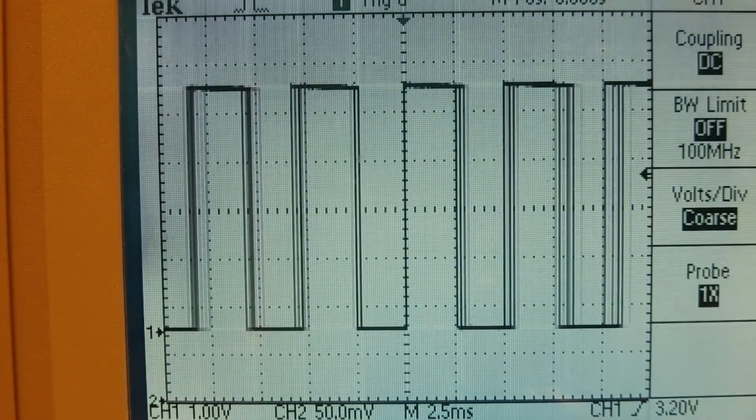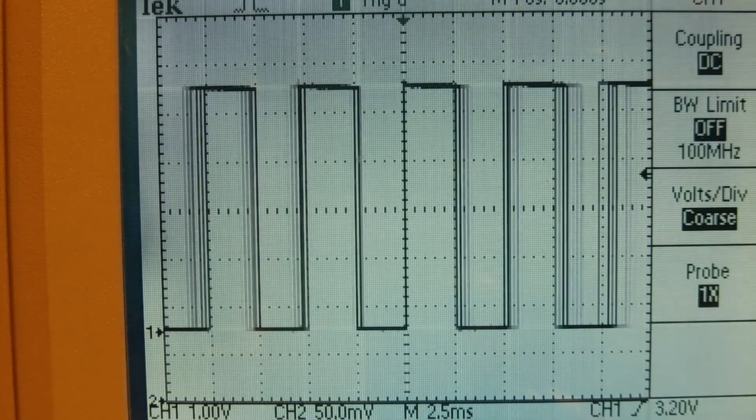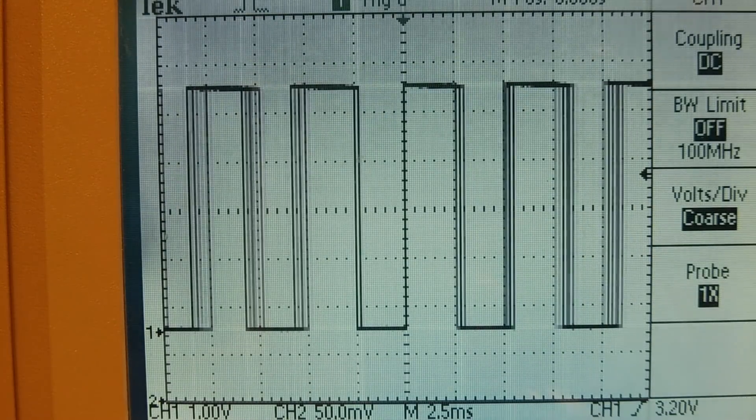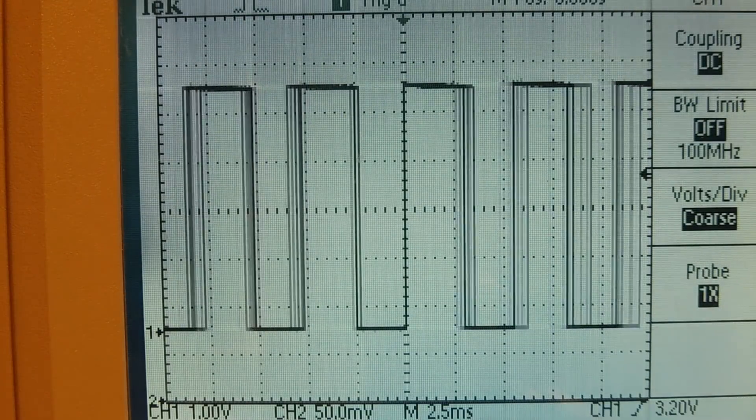Okay, I have my scope hooked up to the gate of the MOSFET that's driving the electromagnet. Now when the pulse is high, when it's 5 volts, it's energizing the electromagnet, and when the pulse is low, it's de-energizing the electromagnet, it's turning it off.